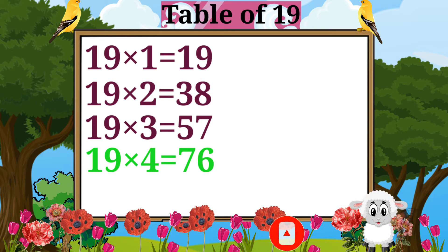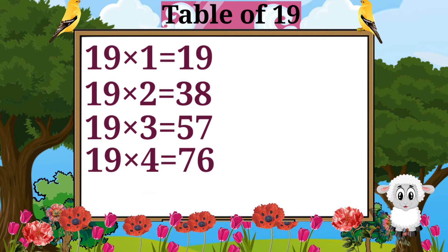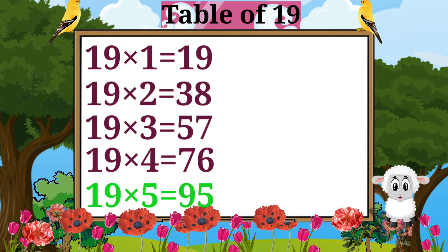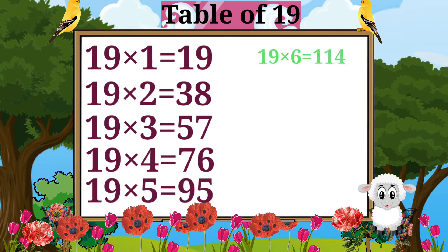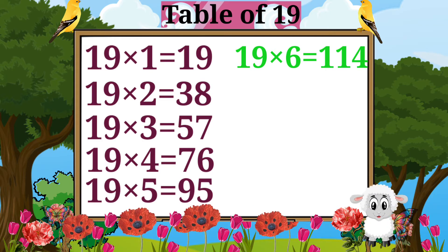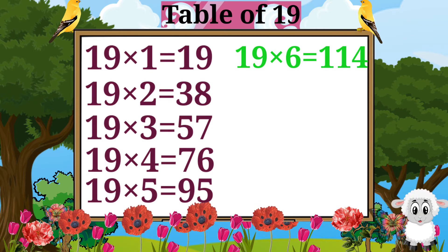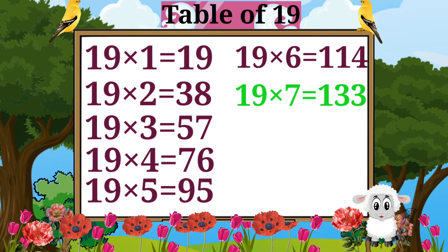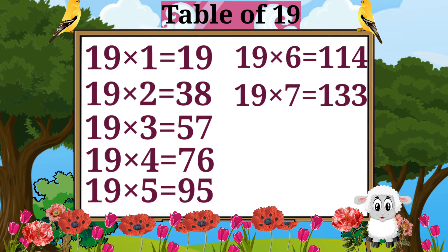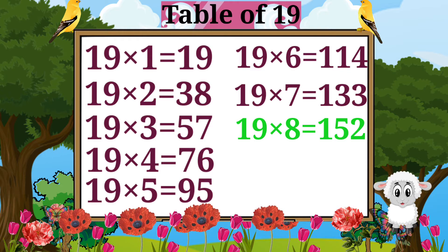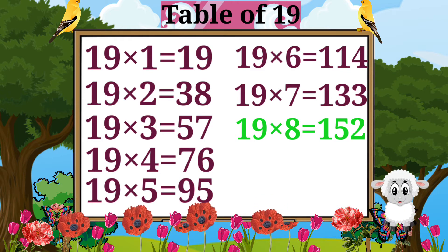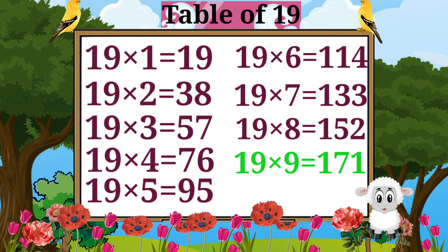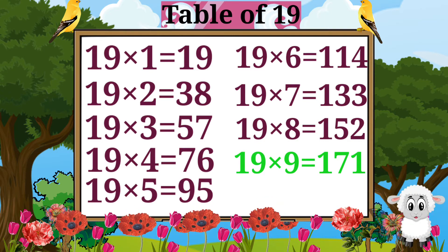19 fives are 95. 19 sixes are 114. 19 sevens are 133. 19 eights are 152. 19 nines are 171.